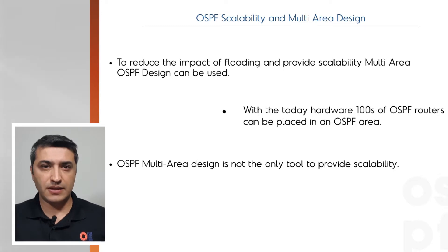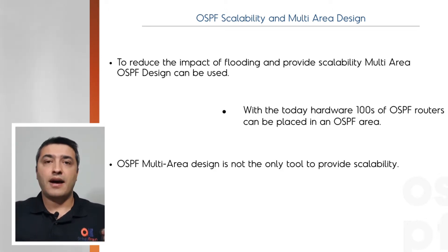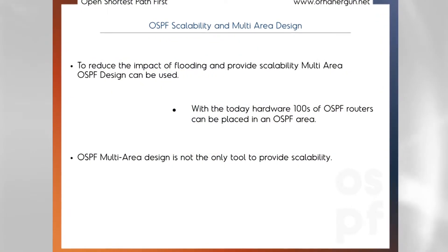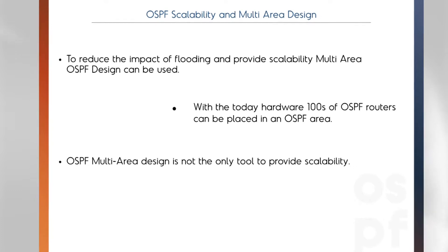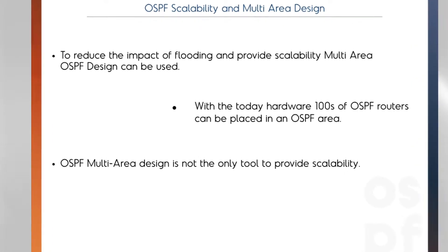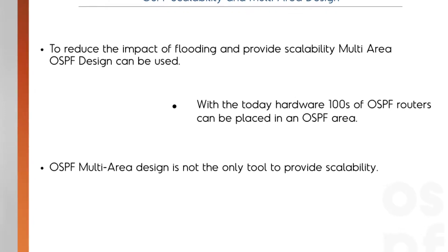OSPF multi-area is not the only feature for OSPF scalability. We will talk about how to place more routers and more links in an OSPF area, how to have less CPU and memory usage on routers, and also configuration-wise how to have less configuration and reduce configuration complexity. These all relate to OSPF scalability. When we talk about BGP we mention route reflectors; here we focus on how to place more routers and reduce control plane load. One feature is OSPF prefix suppression.